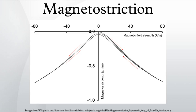Magnetostriction is a property of ferromagnetic materials that causes them to change their shape or dimensions during the process of magnetization.